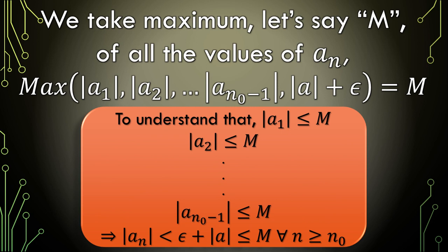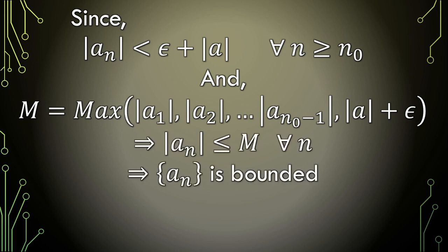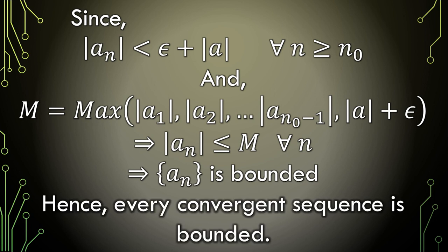All values of a_n are less than or equal to the maximum value of a_n, and since |a_n| < epsilon + |a| for all n ≥ n_0, epsilon + |a| is also less than or equal to M, because M is taken from all values of a_n — not just those with index ≥ n_0. With all that, we have |a_n| ≤ M for all n, which means a_n is a bounded sequence. Since a_n was a random convergent sequence and we have proved it is bounded, we have proved that every convergent sequence is bounded — hence proved.